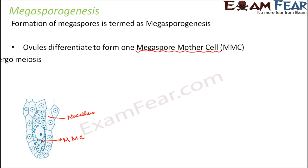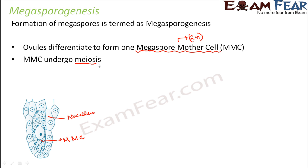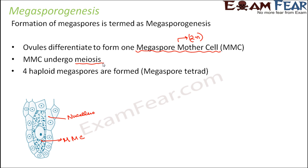This megaspore mother cell is diploid. What will it do? It will undergo meiosis. We want the female gametes, and the gametes are always haploid, so diploid to haploid we need reduction division. It will undergo meiosis and the result will be that four haploid megaspores will be formed.